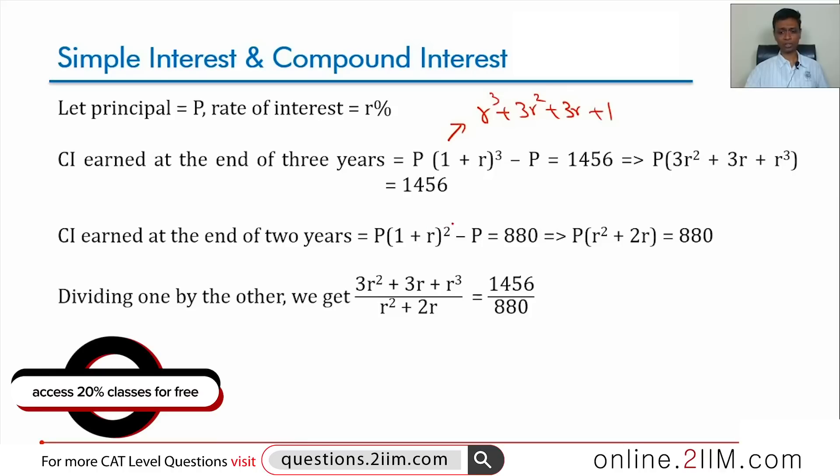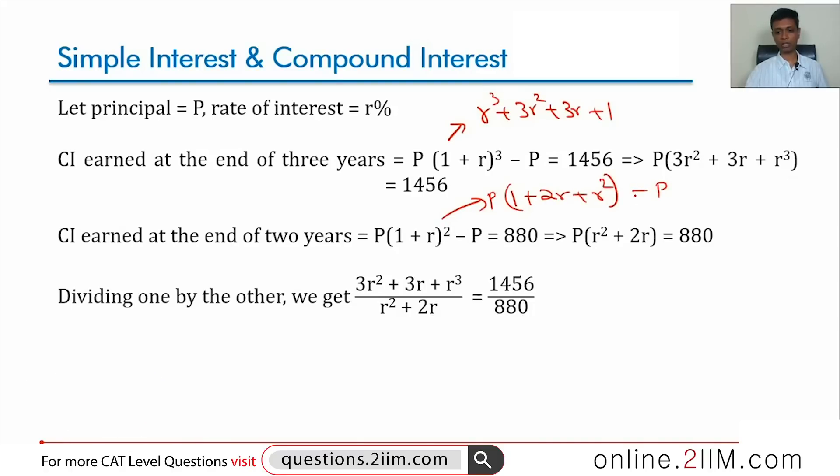At the end of 2 years, this will be P into 1 plus R whole square, which is 1 plus 2R plus R square minus P, plus 1 and minus P get cancelled, P into R square plus 2R is 880. Now it looks like we have 2 variables and then squares, cubes, all of that. But if you divide one by the other, we notice straight away that P gets cancelled. So we get an expression in R, not only that, an extra R also gets cancelled.